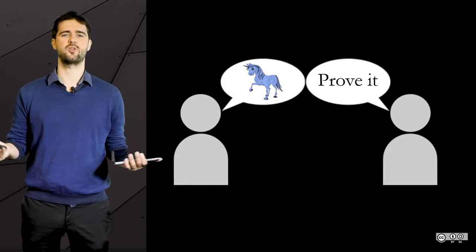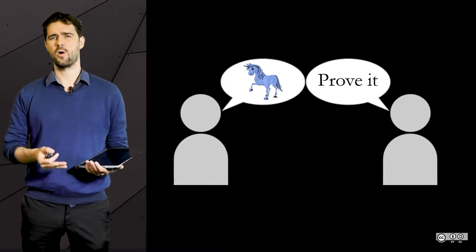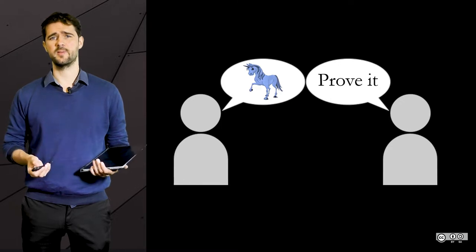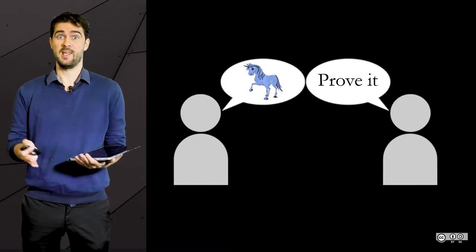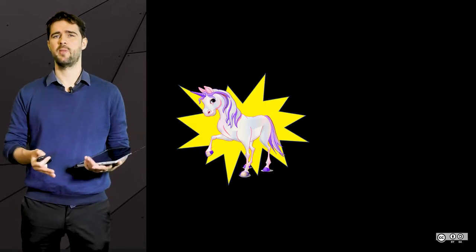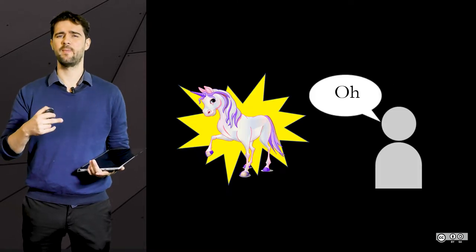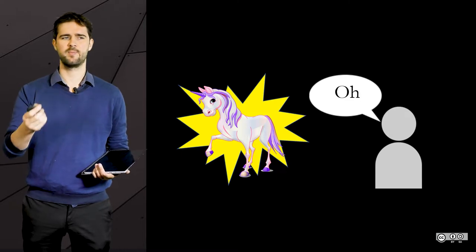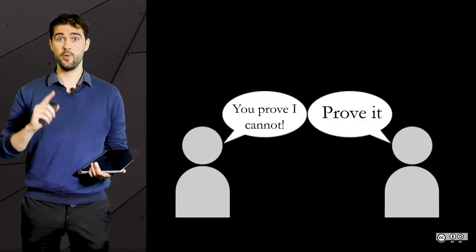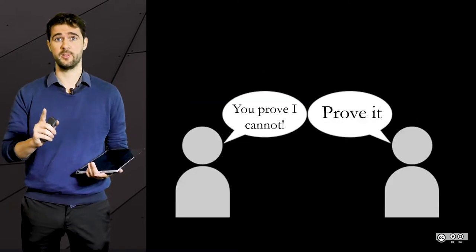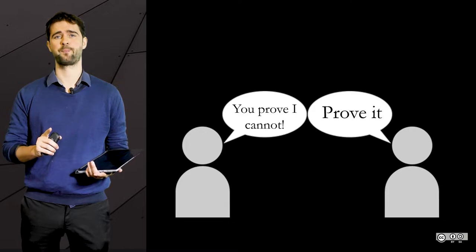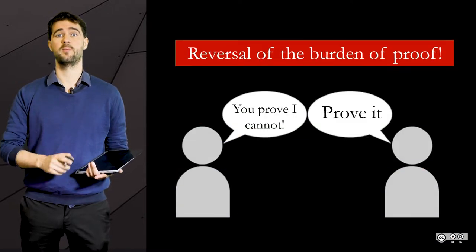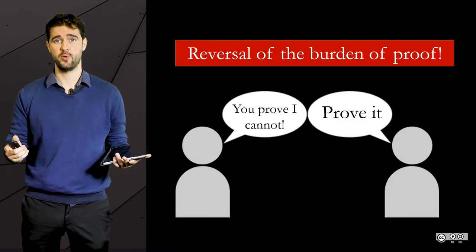So naturally you ask him: okay, prove it — turn into a unicorn then. Well, if he does, he makes a point. But if he says something like, you have to prove that I cannot turn into a unicorn, then he is reversing what we call the burden of proof.